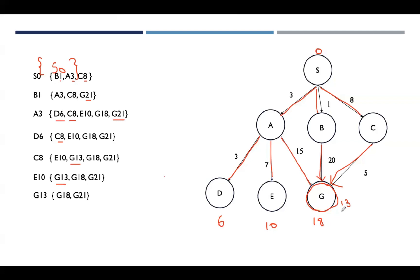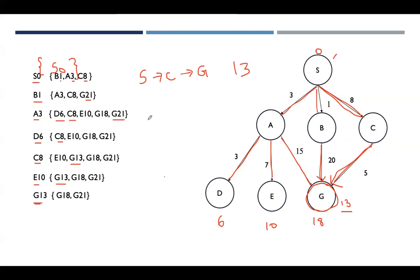The cost to reach the goal is 13, and the path is S → C → G. We reach the goal node from the initial node after expanding all nodes. Counting the number of nodes expanded — including the goal node — gives us: S, B, A, D, C, E, G — a total of seven nodes expanded.